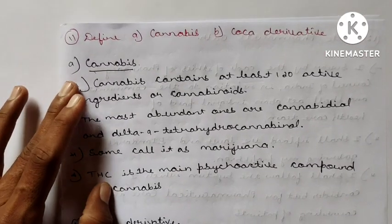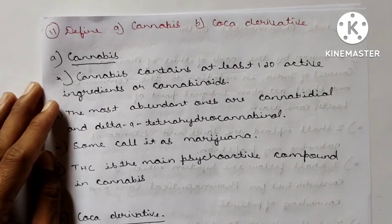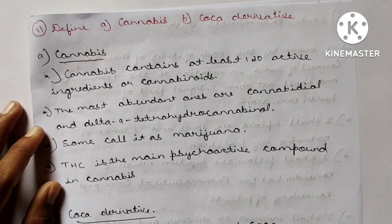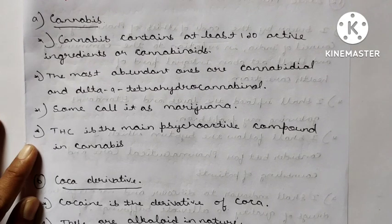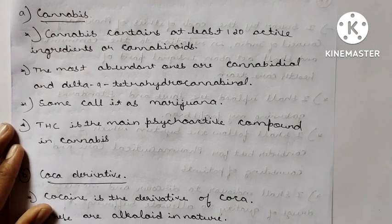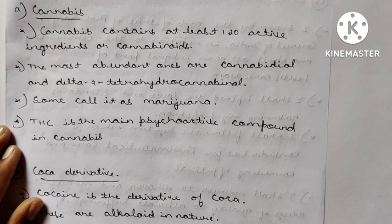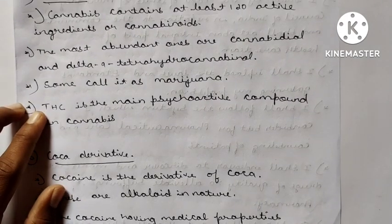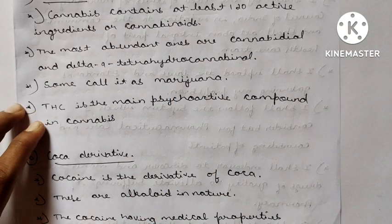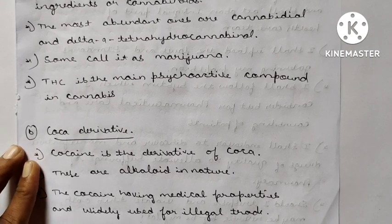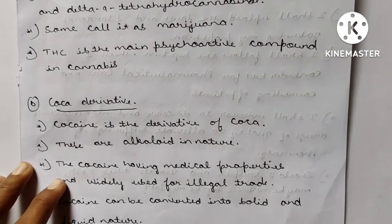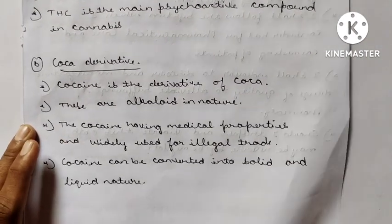Question 11: Define cannabis and coca derivative. Cannabis contains at least 120 active ingredients called cannabinoids; the most abundant ones are cannabidiol (CBD) and delta-9-tetrahydrocannabinol (THC). THC is the main psychoactive compound in cannabis, also called marijuana. The chemical name is tetrahydrocannabinol. Regarding coca derivatives, cocaine is the derivative of coca — it is an alkaloid in nature, having medical properties but widely used for illegal trade. Cocaine can be converted into solid and liquid forms.